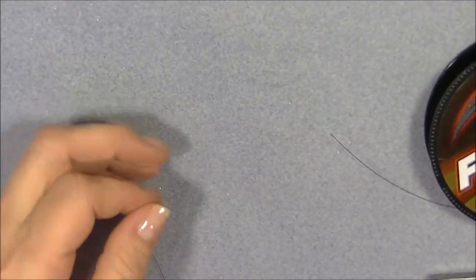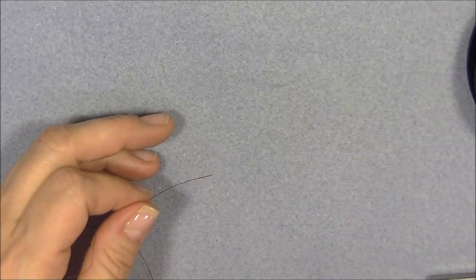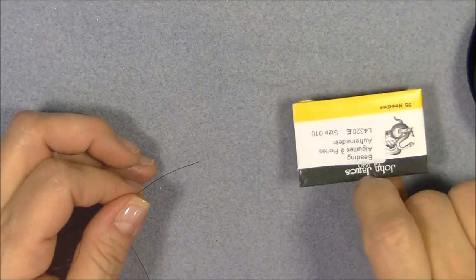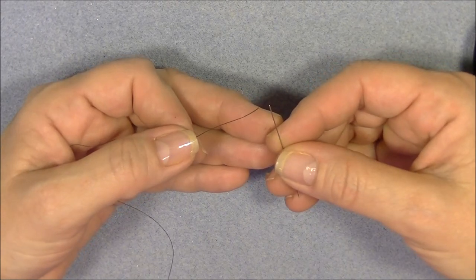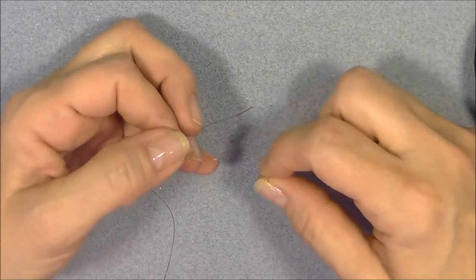So what we are going to do is this is eight pound fireline and this is a size 10 English beading needle John James brand and we are going to thread this eight pound fireline into the size 10 beading needle.